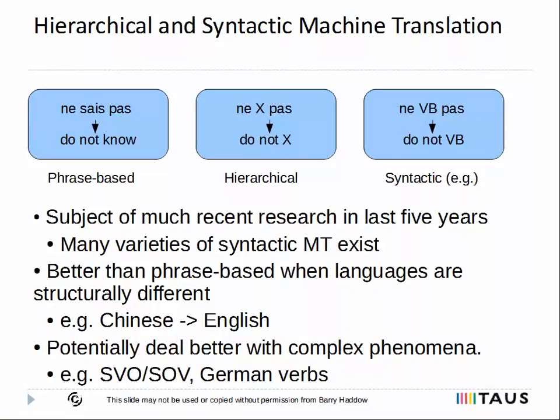Since phrase-based MT doesn't represent the structure of the languages, other approaches have been developed more recently to try to improve on this. For example, hierarchical machine translation is a reasonably straightforward extension of phrase-based MT which allows X's to be inserted into the phrases. The X's can then be replaced by any other phrase pair at translation time. There can be more than one X which allows reordering to be represented. Hierarchical MT can then represent structural correspondences, for example, negation in French-English as in the example shown in the slide. It should be emphasized that hierarchical MT doesn't include any linguistic syntax at all. Hierarchical MT is typically better when there's a lot of structural differences between the two languages, for example translating from Chinese or Japanese into English. It's well supported by open-source MT toolkits but is not so well used commercially, possibly because training and decoding are much more resource-intensive.